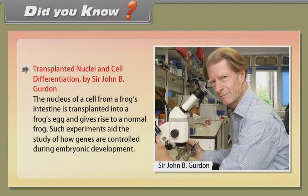Did You Know? Transplanted Nuclei and Cell Differentiation by Sir John B. Gurdon. The nucleus of a cell from a frog's intestine is transplanted into a frog's egg and gives rise to a normal frog. Such experiments aid the study of how genes are controlled during embryonic development.